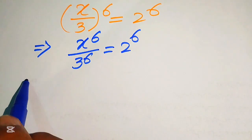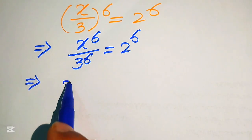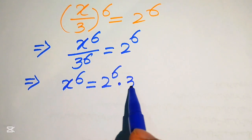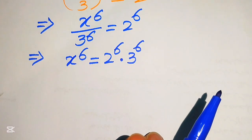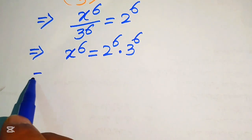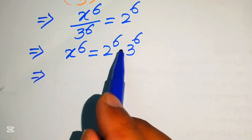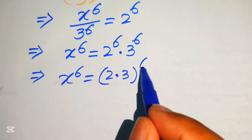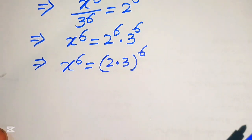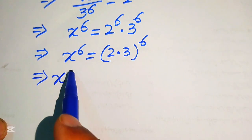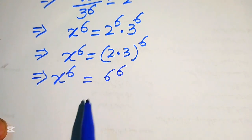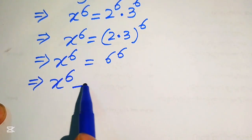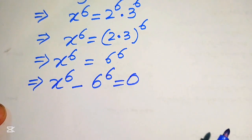Since we are solving for x, we move 3 to the power of 6 to the right-hand side. It will be written as x to the power of 6 equals 2 to the power of 6 multiplied by 3 to the power of 6. Applying the exponent law, we combine the exponents: x^6 = (2×3)^6 = 6^6. Moving 6^6 to the left-hand side gives x^6 − 6^6 = 0.